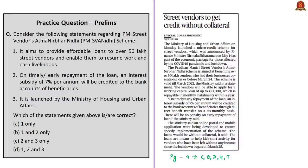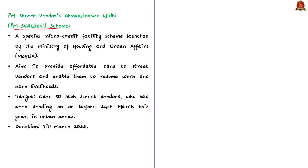Yesterday, the union cabinet chaired by the prime minister took several decisions to tackle economic impacts of COVID-19. One important decision is the special micro-credit facility scheme for street vendors — the Prime Minister Street Vendors AtmaNirbhar Nidhi or PM SVANidhi Scheme. It is a special micro-credit facility scheme launched by the Ministry of Housing and Urban Affairs. Street vendors are one of the most affected economic groups due to the pandemic-imposed lockdown. This scheme aims to enable street vendors to resume work and earn livelihood by providing affordable loans, targeting over 50 lakh street vendors in urban areas, with a duration till March 2022.